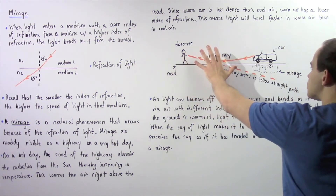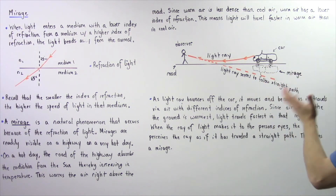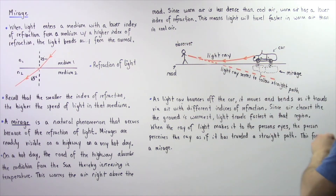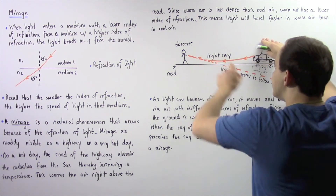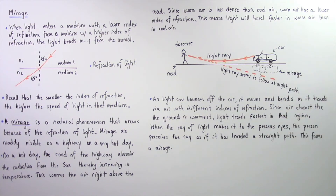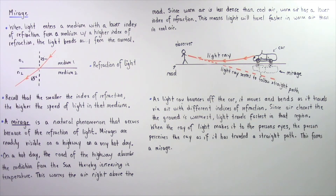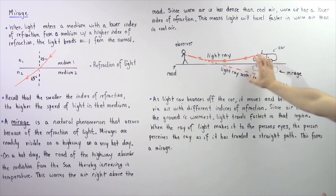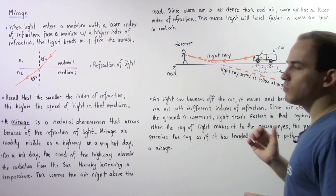If the person comes closer to the car, this mirage will eventually disappear and the person will see the car, because the light doesn't actually bend enough. Once again, as a light ray bounces off the car, it moves and bends as it travels through air with different indices of refraction. Since air closest to the ground is warmest, it has the lower index of refraction and light travels fastest in that region. When the ray of light makes it to the person's eyes, the person perceives the ray as if it has traveled a straight pathway, and this forms the image known as the mirage.